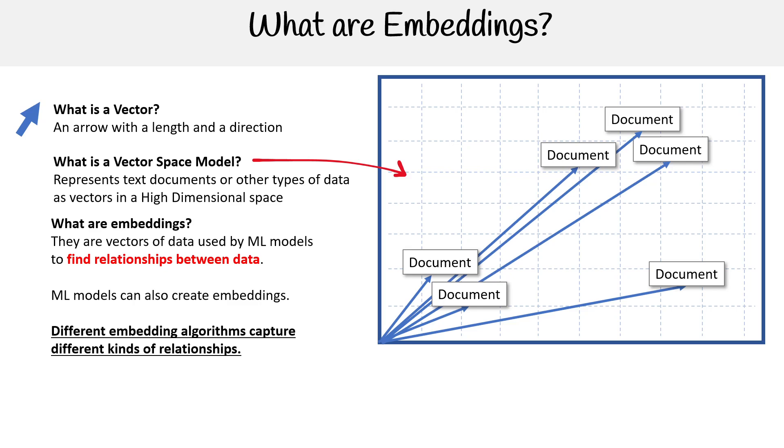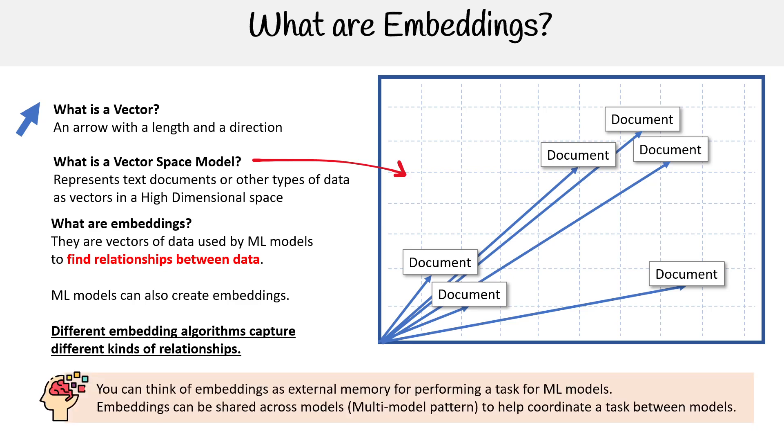And these ML models that produce embeddings are looking at not just a single relationship, like length of word, but multiple relationships and correlating that to put it into vector space. You can think of embeddings as external memory for performing a task for machine learning models. Embeddings can be shared across models, which would give us a multi-model pattern to help coordinate a task between models.